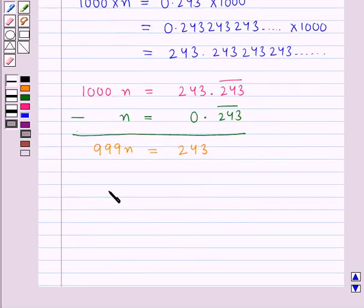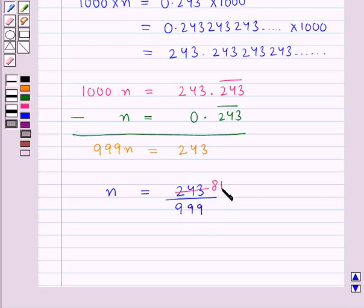We have n equals 243 upon 999. Now, 3 times 81 is 243, and 3 times 333 is 999.